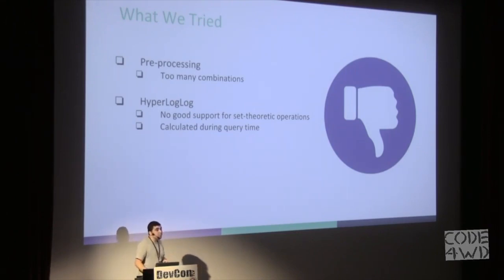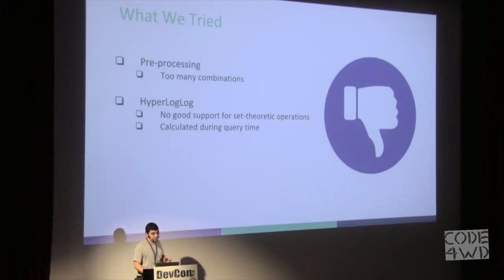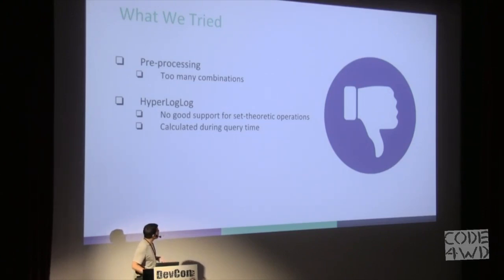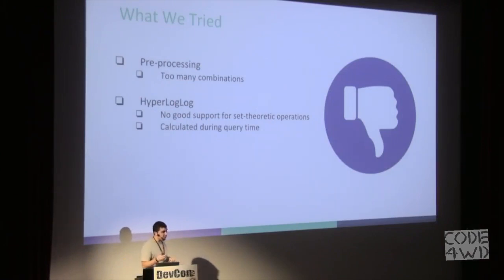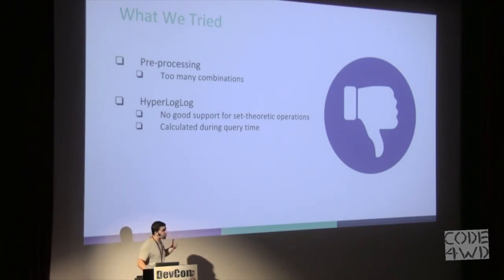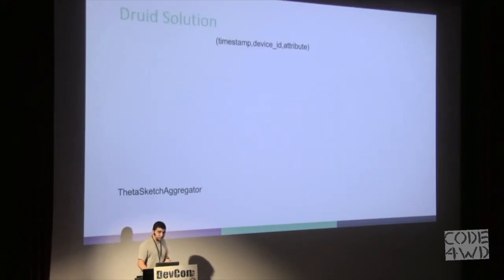Then we decided to look for probabilistic algorithms. The first algorithm we tested was HyperLogLog — we looked at it first because Elasticsearch supports HyperLogLog out of the box. However, HyperLogLog doesn't support set-theoretic operations well: the error jumps very significantly when doing them, so it's not best practice. Also, when using Elasticsearch with HyperLogLog, we still had the issue that all calculation was done during query time.